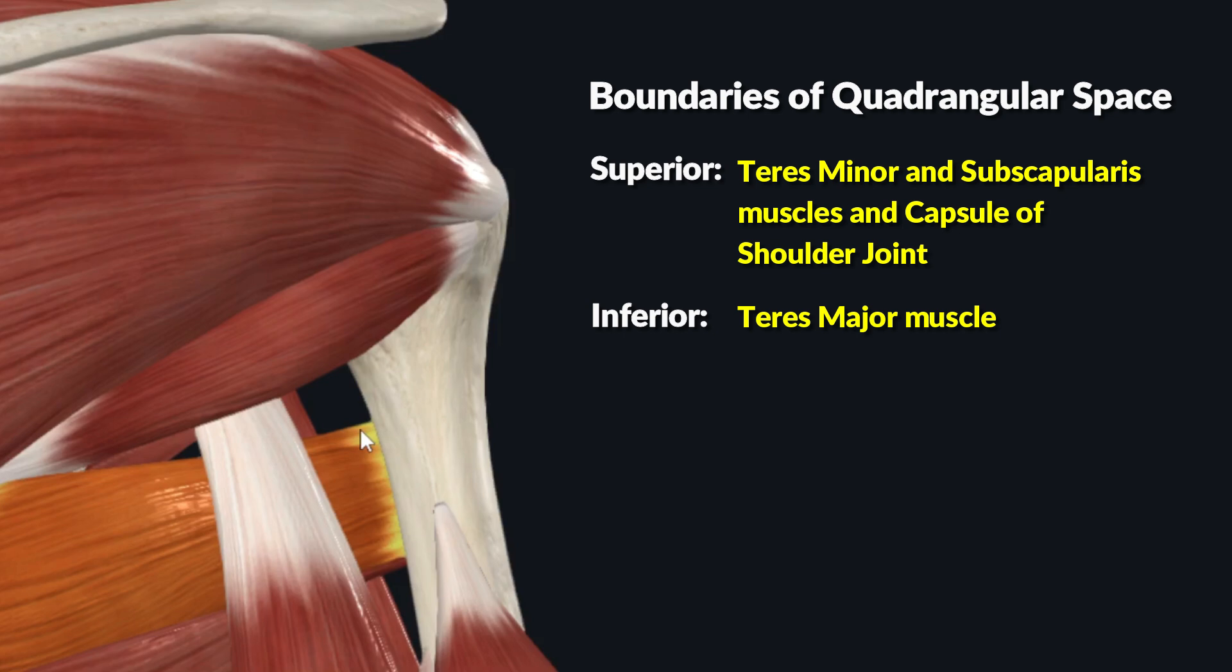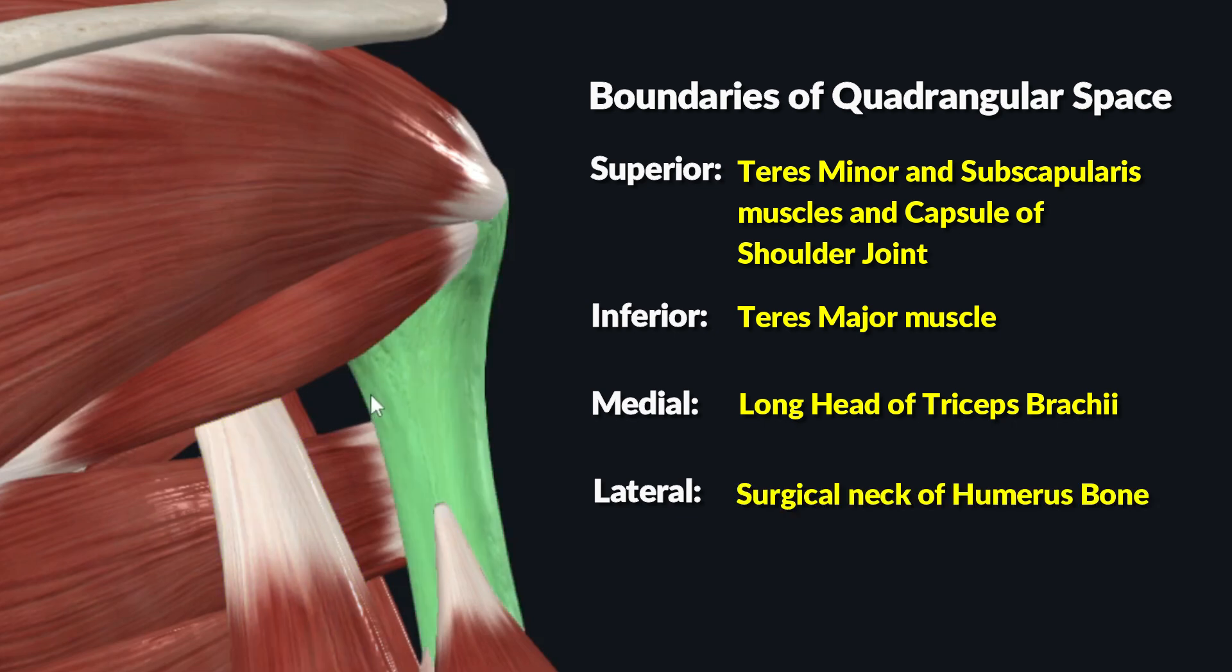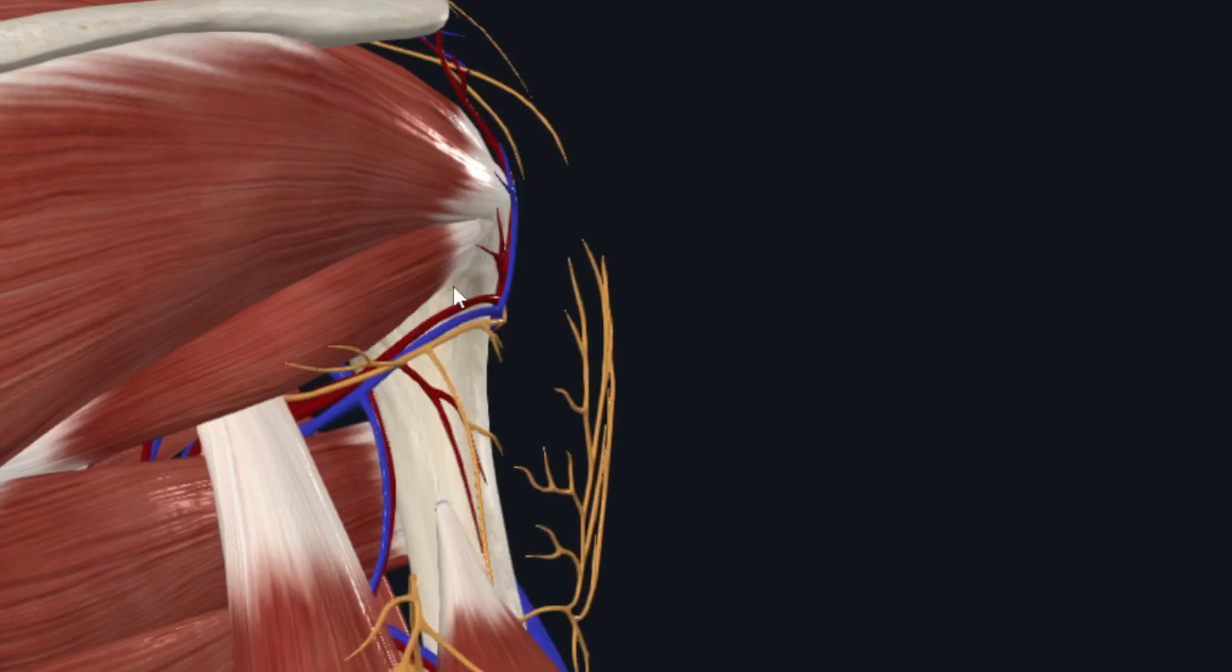Medially it is bounded by the long head of the triceps brachii muscle, while laterally it is bounded by the surgical neck of the humerus bone. You would be thinking why it is important to discuss this intermuscular space.